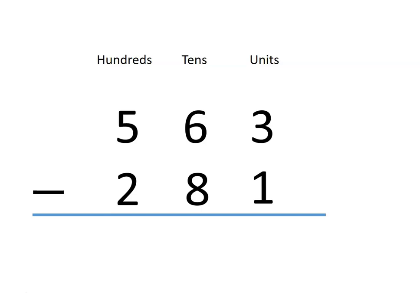We have 563, and we want to take away 281. Let's start by subtracting the units first. We have 3 units, but we want to take away 1. That leaves us with 2 units.